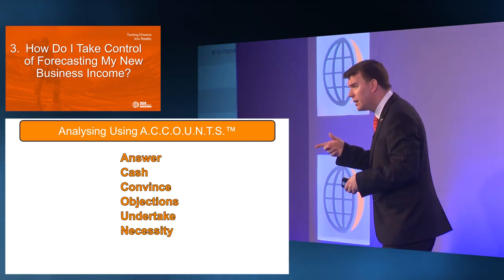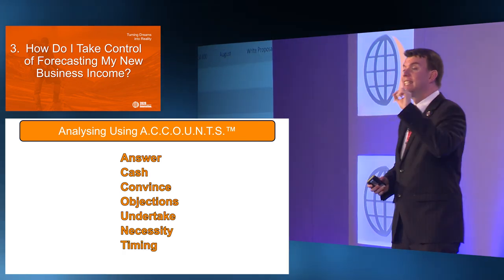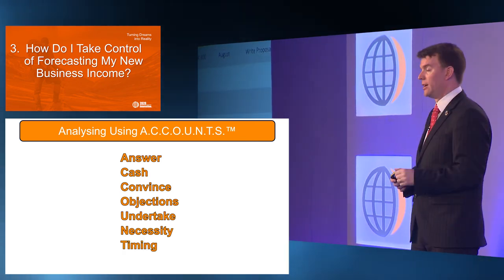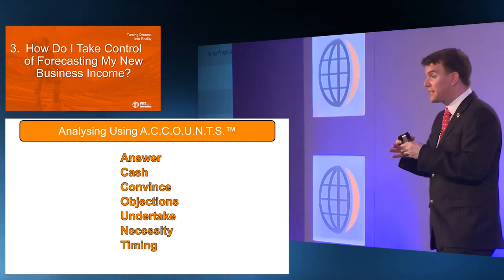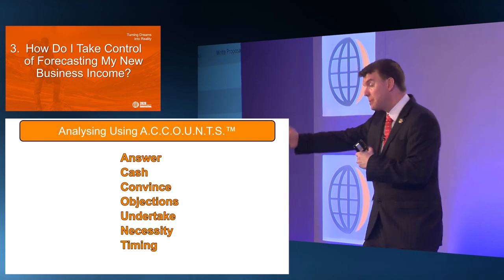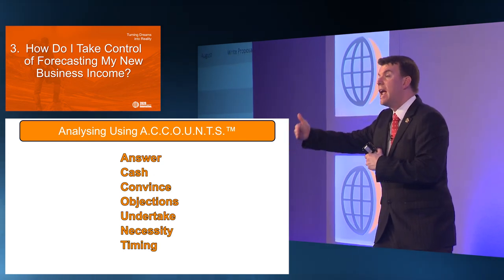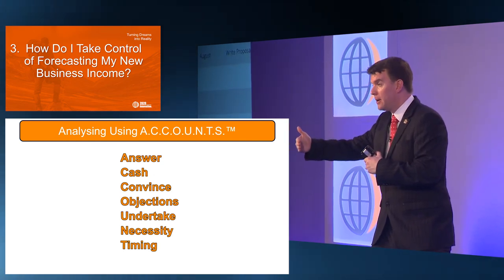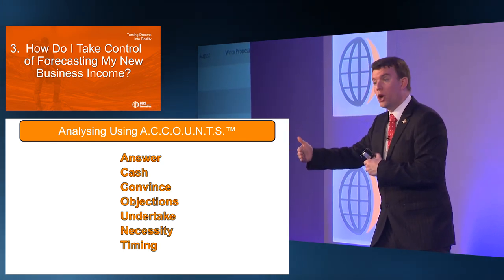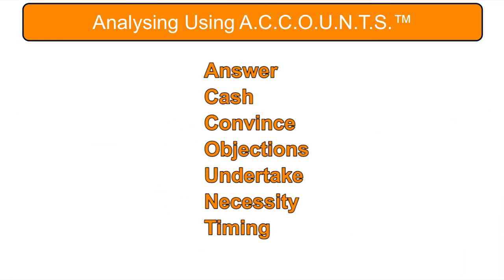The T stands for timing — in other words, have you got the timing of the next meeting with them in the diary? And generally we don't. We have: they're going to email us, we're going to email them, I said I'd call them next week, they're going to send me books and records — and all of these things never actually occur.